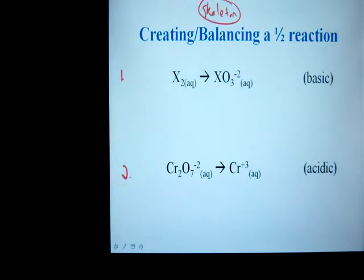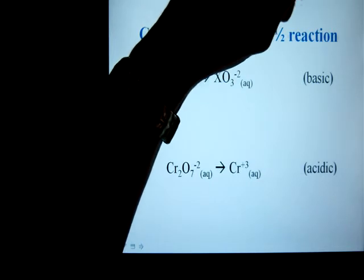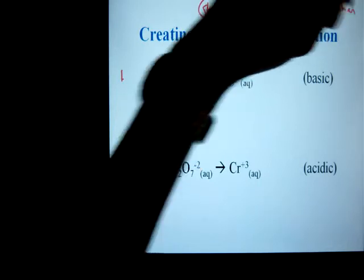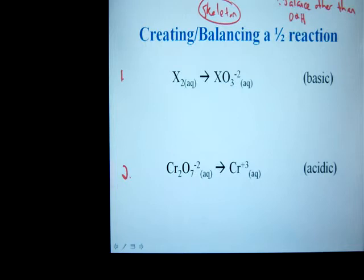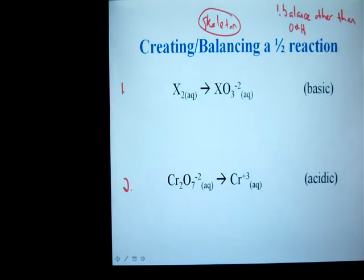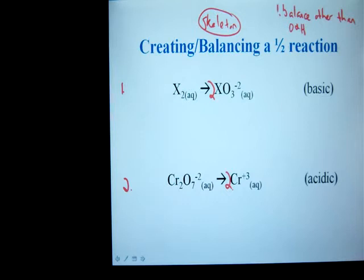First thing we're going to do, and this is regardless if it's a half reaction or a full reaction, is you're going to balance all atoms other than oxygen and hydrogen. So for example one, that's going to give us a two here. Example two will also give us a two there. That doesn't always come into play, but you must check for it. It's a really easy place to make a mistake.